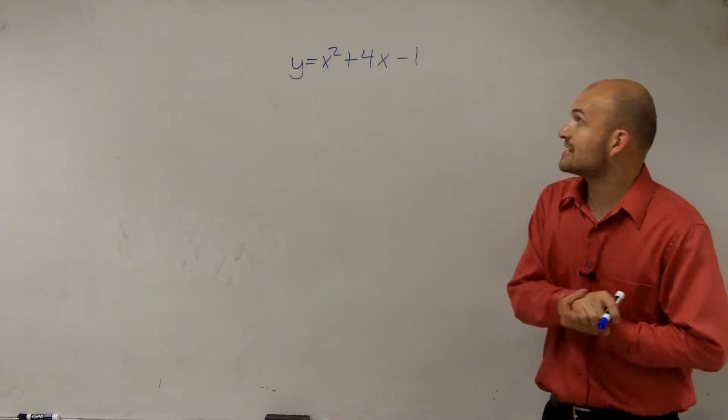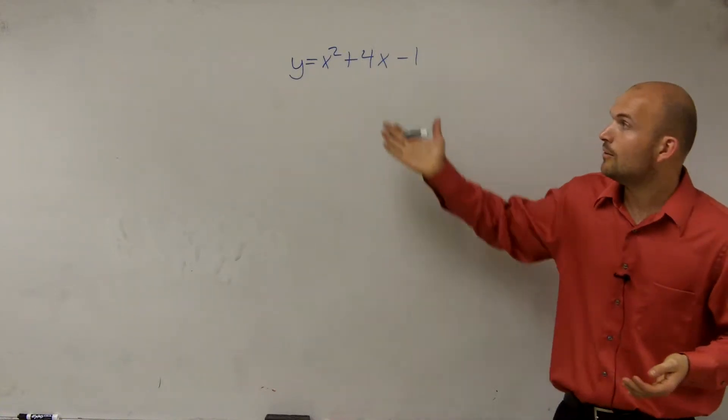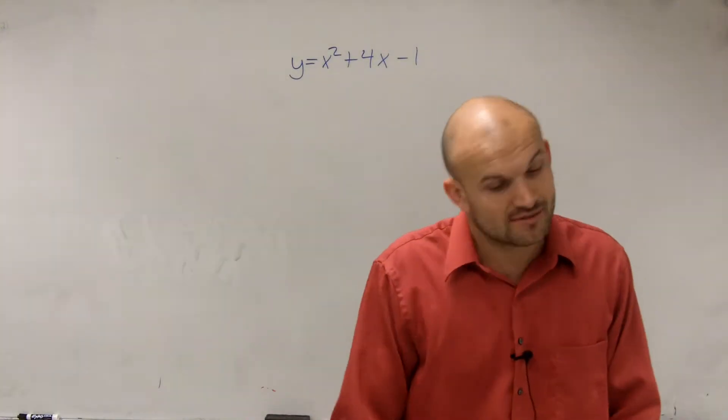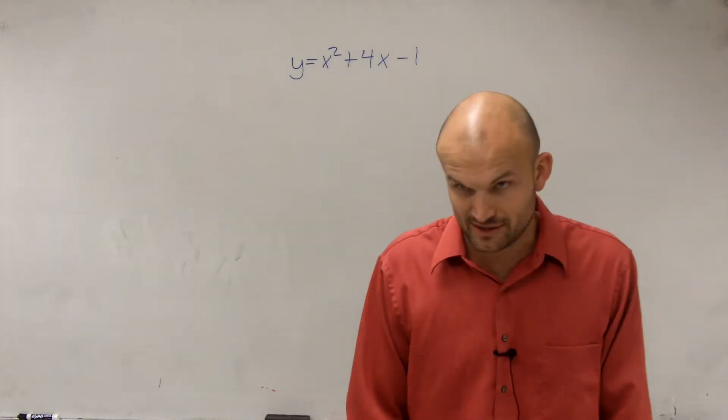So what we have is y equals x squared plus 4x minus 1. Now what we're going to be dealing with is the first question asks you to find the axis of symmetry and the second question asks you to find the vertex.